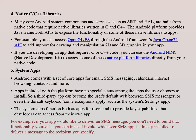The next layer is system applications. Android comes with a set of core applications for email, SMS, messaging, calendar, internet browsing, contact information, and more. Applications included with the platform have no special status — a third-party application can become the user's default web browser, SMS messenger, or even the default keyboard. System apps also provide key capabilities that developers can access from their own applications. For example, if your application needs to deliver an SMS, you don't need to build that functionality yourself — you can invoke the installed SMS application to deliver the message.